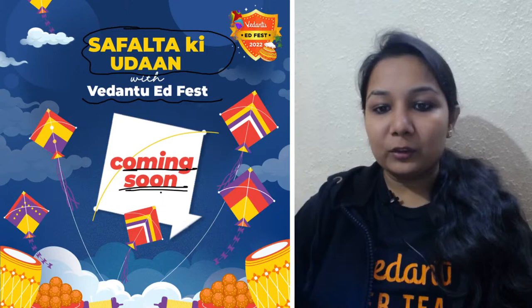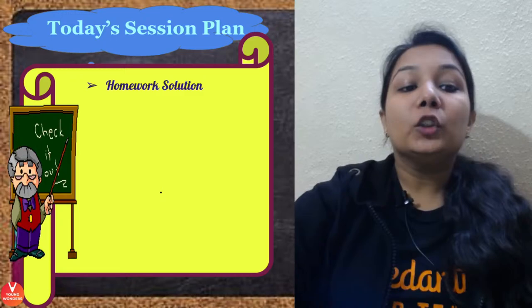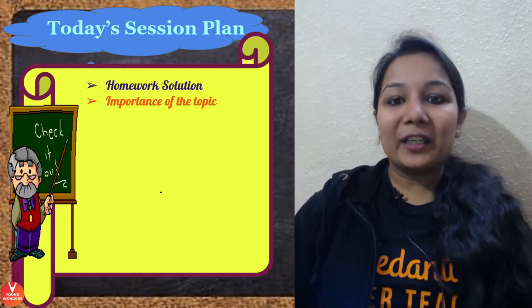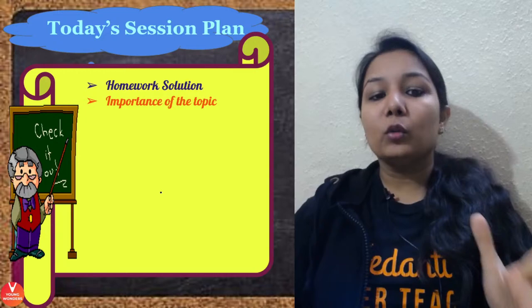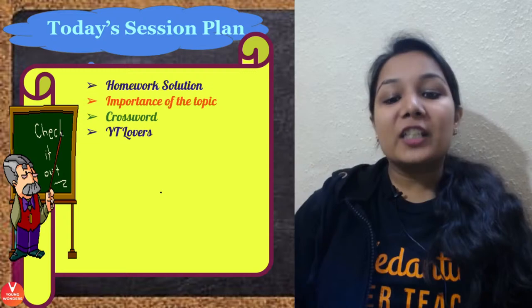Give a big fat thumbs up to the session so that when your favorite teacher Priya ma'am comes live you get a bell notification. Today's session plan: first, homework solution from the previous class; then the importance of unitary method — pahna kyun zaruri hai — because unless you get the logic behind something, we should not do it; and then there is a super duper amazing crossword for you all.